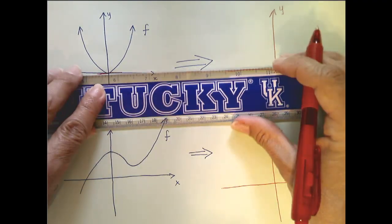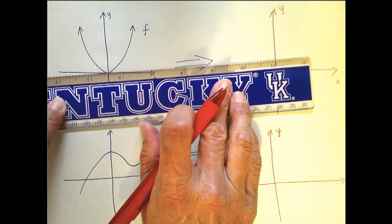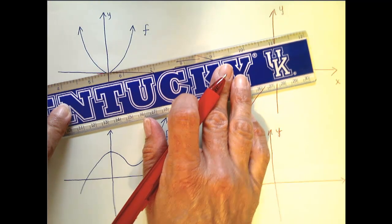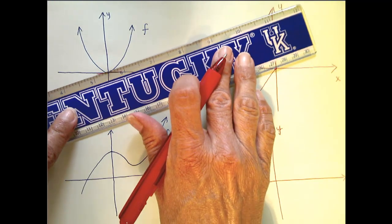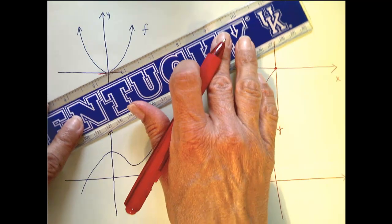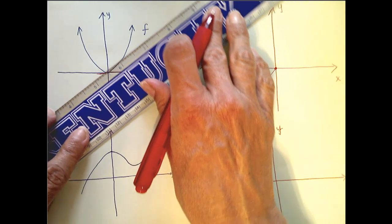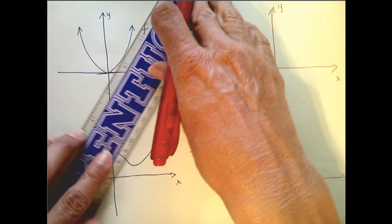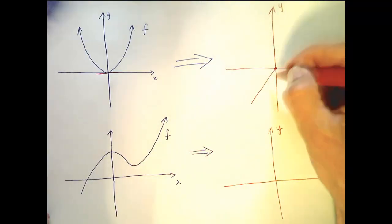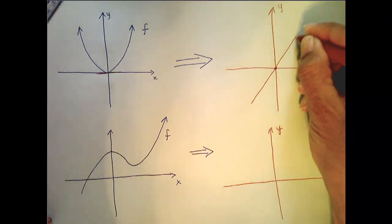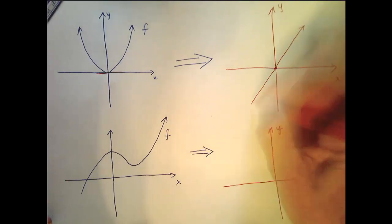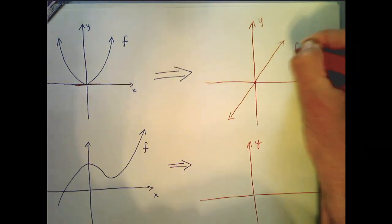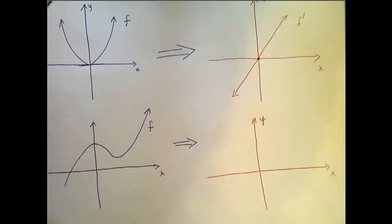Now what happens as I move on to the right, as x gets bigger? My slopes grow — they're positive now, and they're getting more and more positive as I move x in the positive direction. So it starts to grow this way. So if this is my graph of f, this is a nice sketch of its derivative function.